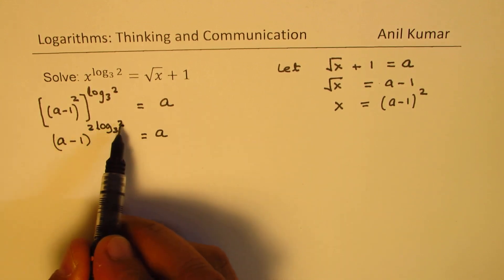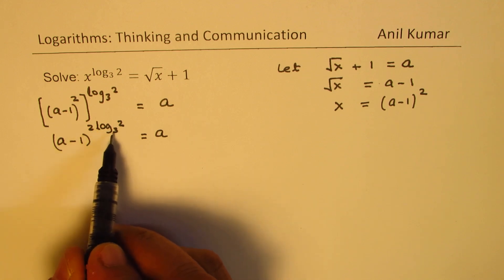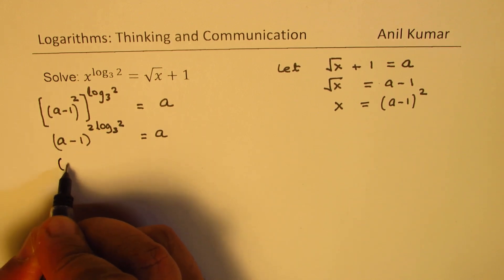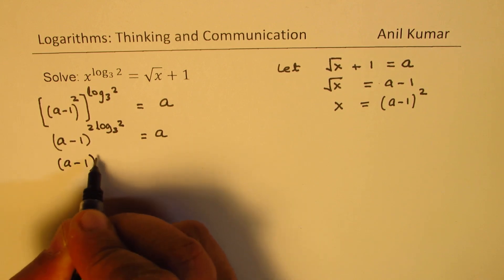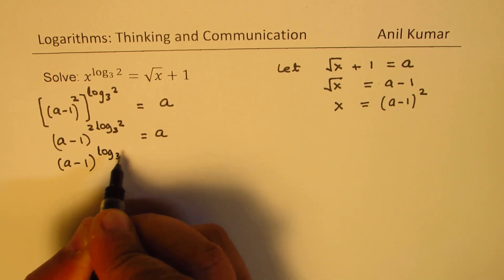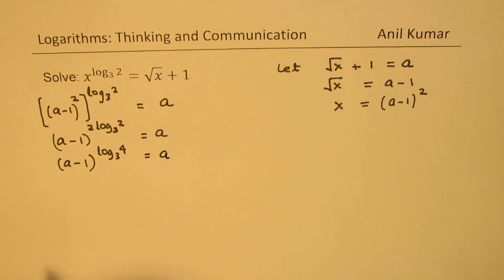Again using the power rule we can write this as log to the base 3 of 4. So we get a minus 1 to the power of log to the base 3 of 4 equals a.